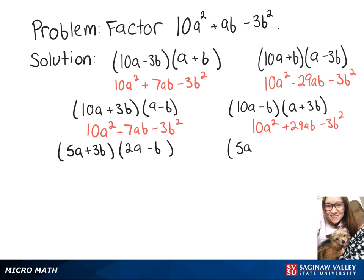And then again, we're going to flip-flop those two. So 5a minus b times 2a plus 3b. So multiplying this first one out, 5a times 2a gives 10a squared. Then we have 5a times negative b is negative 5ab plus 6ab is plus ab. And then minus 3b squared. So finally, we have the trinomial that we started with.